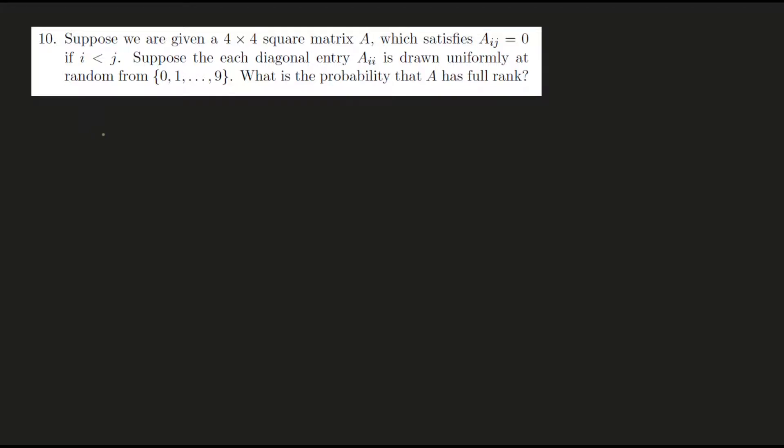Question 10: Suppose we are given a 4 by 4 square matrix A which satisfies Aij equals 0 if i is less than j. So let me try and make such a matrix.